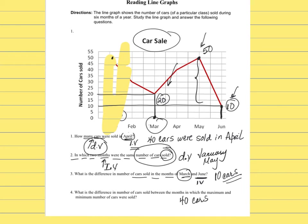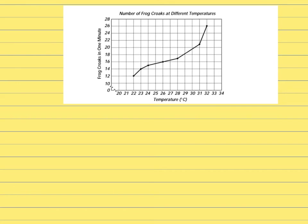One more time: when you are analyzing a line graph, your first step is to look at the title, the independent variable, and the dependent variable. Then try to see the trend represented. If the line is going down, as the independent variable is increasing, the dependent is decreasing. If the line is going up, as the independent is increasing, the dependent is increasing as well. And if you have a horizontal line, that means there is no variation — but we still call it a line graph because it shows the relationship between the dependent and the independent variable.